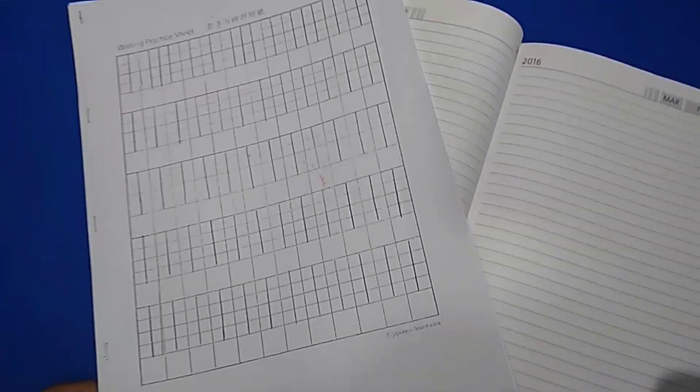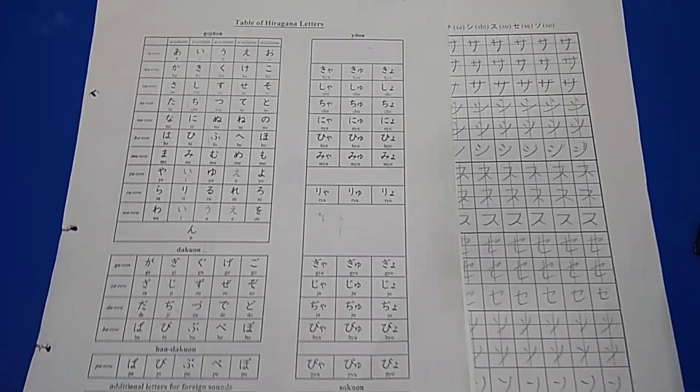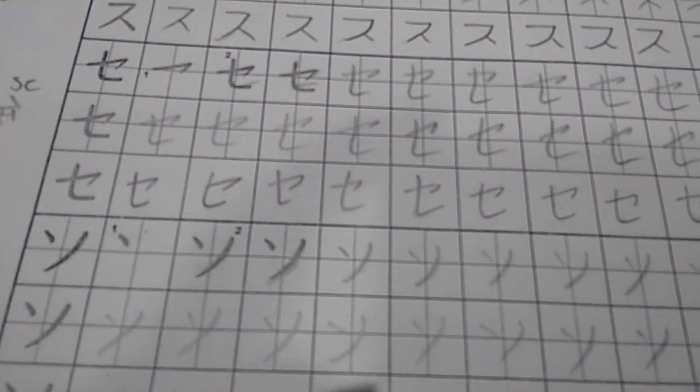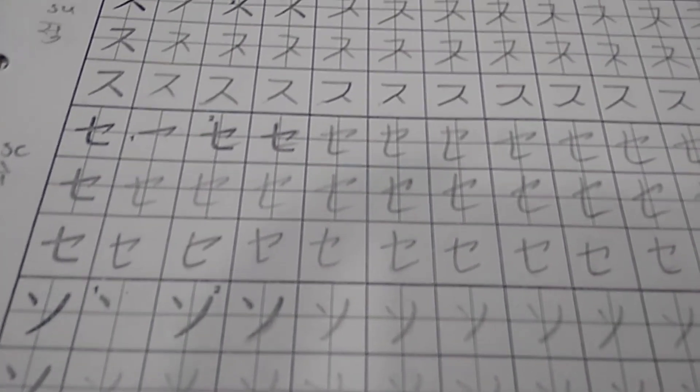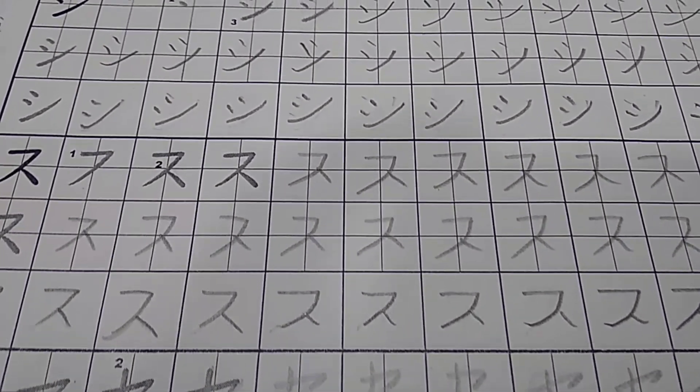Now most people get confused when to use the ruler notebook and when to use the grid bin. So if you have just started learning Hiragana and Katakana use the grid bin, because it helps you to make characters in a correct formation.